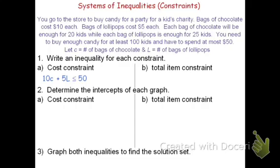Setting this problem up, I see that 20 kids per bag of chocolate would be 20c. 25 kids per bag of lollipops would be plus 25l, and we have to have enough for at least 100, which would be greater than or equal to 100.